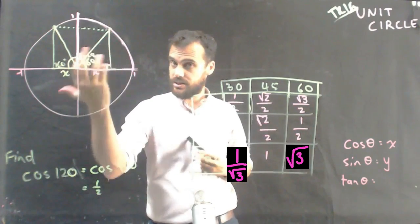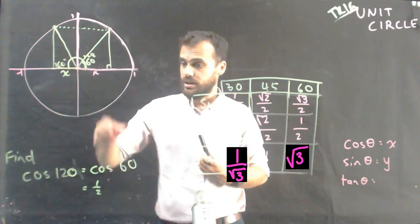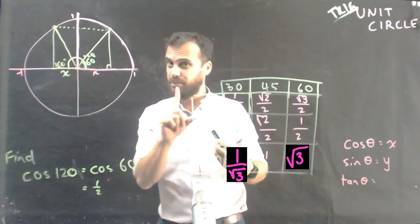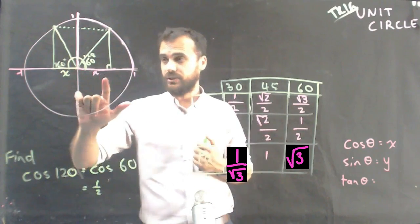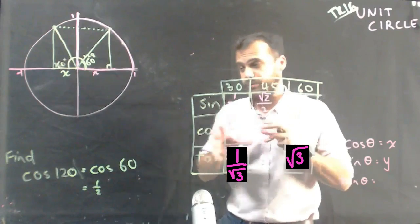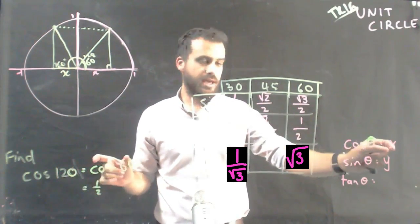So using this symmetrical method, we can say that cos 120 is equal to cos 60, one half. But look carefully. This is a Cartesian plane. It's a Cartesian plane. And cos is equal to the x value.